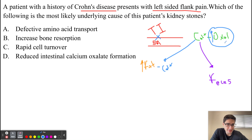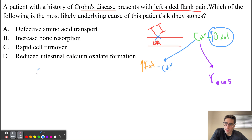The free oxalate gets reabsorbed in the intestines and ultimately travels to the urine, where it can then precipitate out and cause kidney stones.